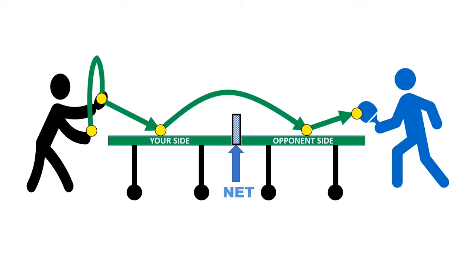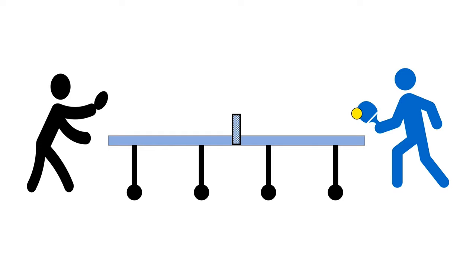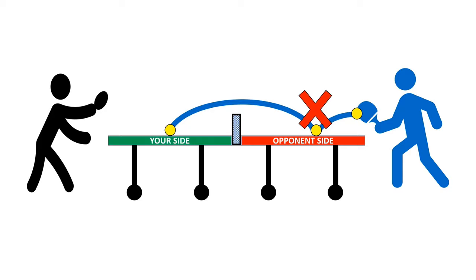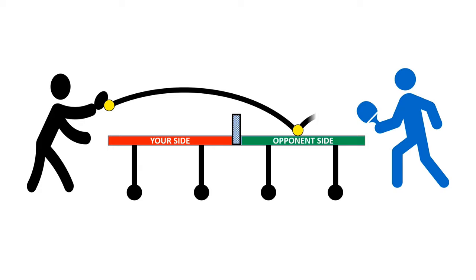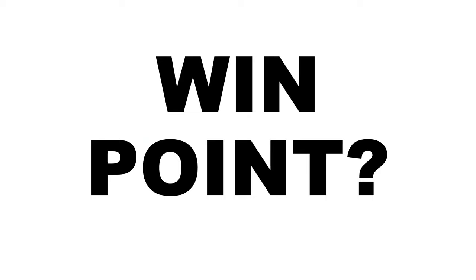After the serve, if your opponent is trying to hit the ball, they need to hit it onto your side of the table. If they hit it on their own side, that's wrong. So the opponent hits to your side, then you hit to their side, and the game goes on like that.